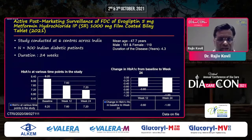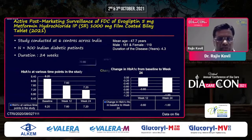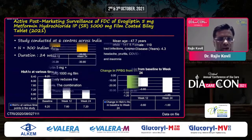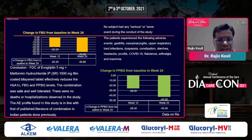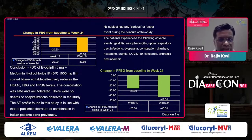A PMS study of evogliptin plus metformin sustained-release bilayer conducted at six centers across India also shows an effective and durable reduction in HbA1c with a 1 percent drop at the end of 24 weeks. The FDC data on file shows significant reduction in HbA1c, fasting plasma glucose, and postprandial glucose at the end of six months.